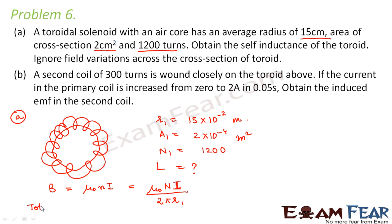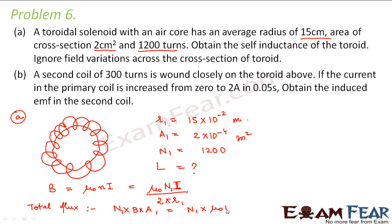The total flux associated with this toroid will be equal to N — the number of turns — into B into A, where A is A₁ and N is N₁. So this would be the total flux, which we can write as N₁ into μ₀N₁I divided by 2πr₁, into A₁.